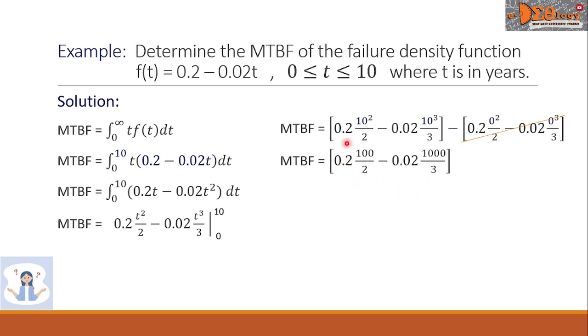Let us simplify the first group only. So, we have now 0.2 times 100 over 2, minus 0.02 times 1000 over 3. Simplifying each of the fractions, we have now 10 minus 6.7, and the difference is 3.3, and we say that this is in years. It means the mean time to failure of the item is just over 3 years.